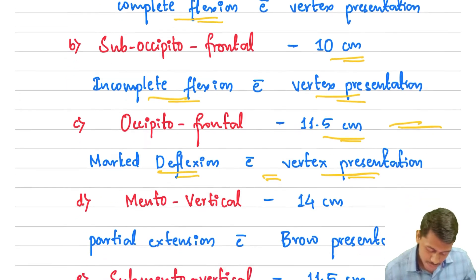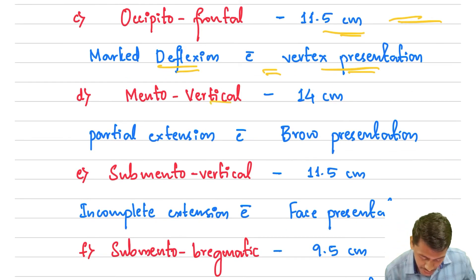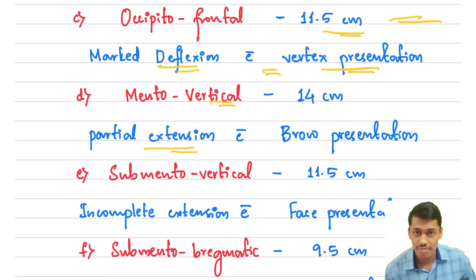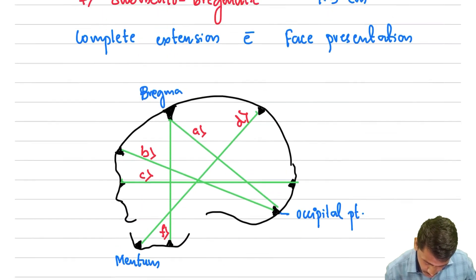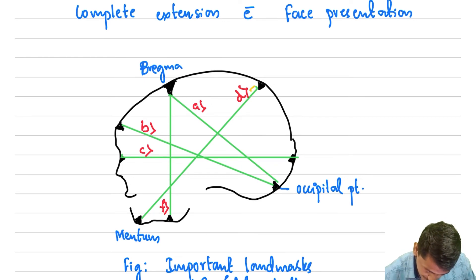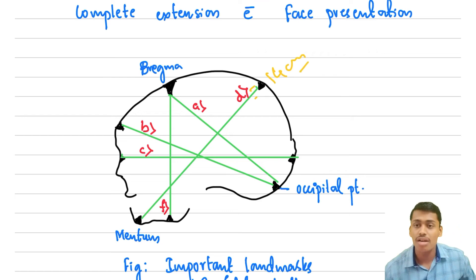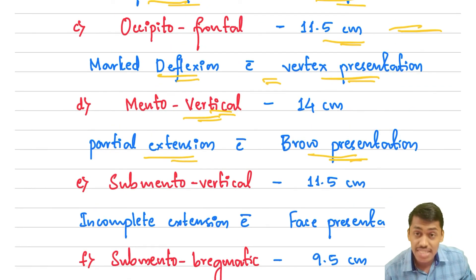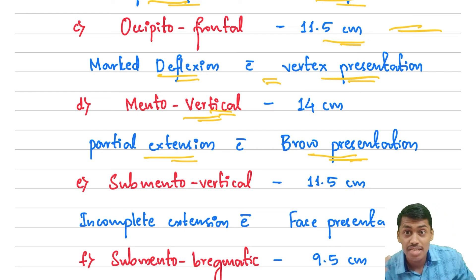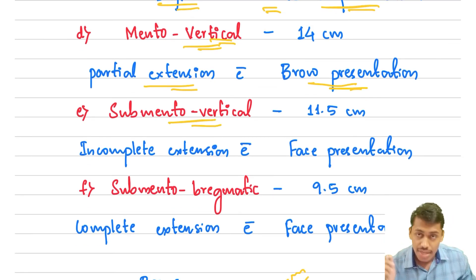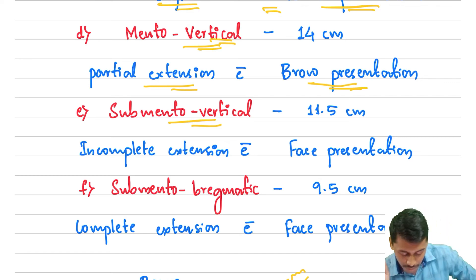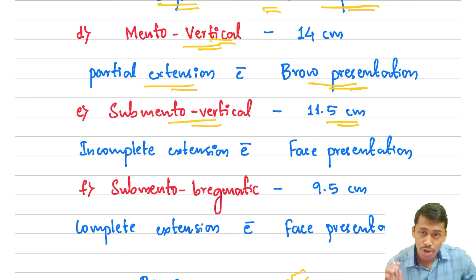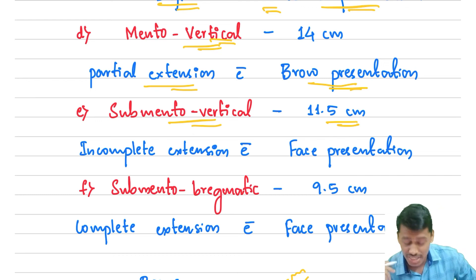Moving on to the mento-vertical diameter, which occurs when there is partial extension — a brow presentation. This is the longest diameter, measuring up to 14 centimeters, from the mentum to the vertex. It is the longest anterior-posterior diameter of the fetal skull and occurs with brow presentation. The next diameter is the submentovertical diameter, measuring up to 11.5 centimeters, occurring with incomplete extension and face presentation.